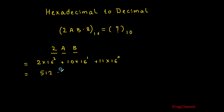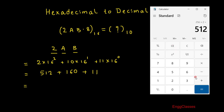Next, 10 into 16 to the power 1 is 160. And 11 into 16 to the power 0 — since 16 to the power 0 is 1 — gives 11. Using the calculator: 512 plus 160 plus 11 gives 683.